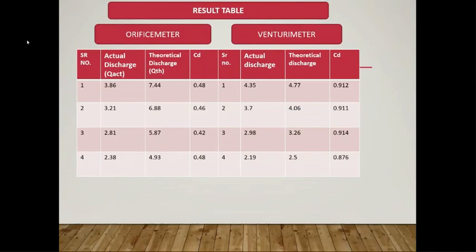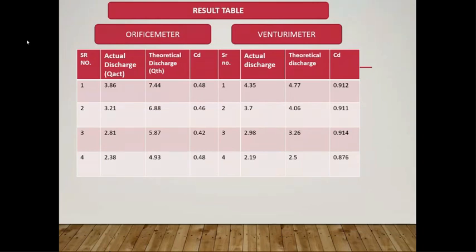In the result table, actual discharge is calculated as volume collected divided by time t, and theoretical discharge is calculated as A1 × A2 × √(2gH) / √(A1² − A2²), where A1 and A2 are the areas of the inlet pipe and throat respectively in square meters. The coefficient of discharge is the ratio of actual discharge to theoretical discharge. The same procedure is followed for the venturi meter.